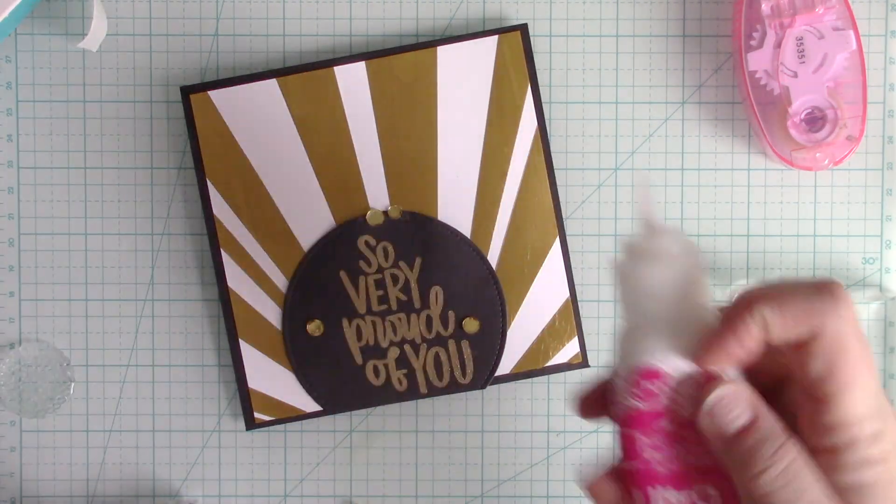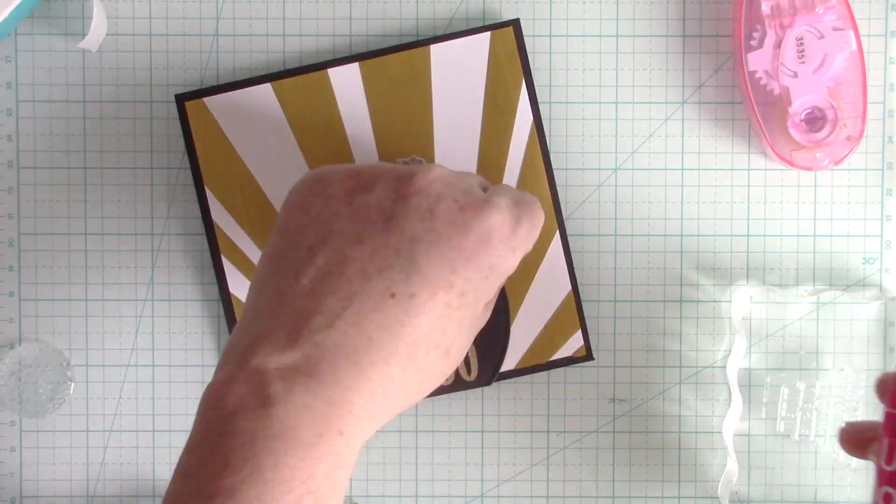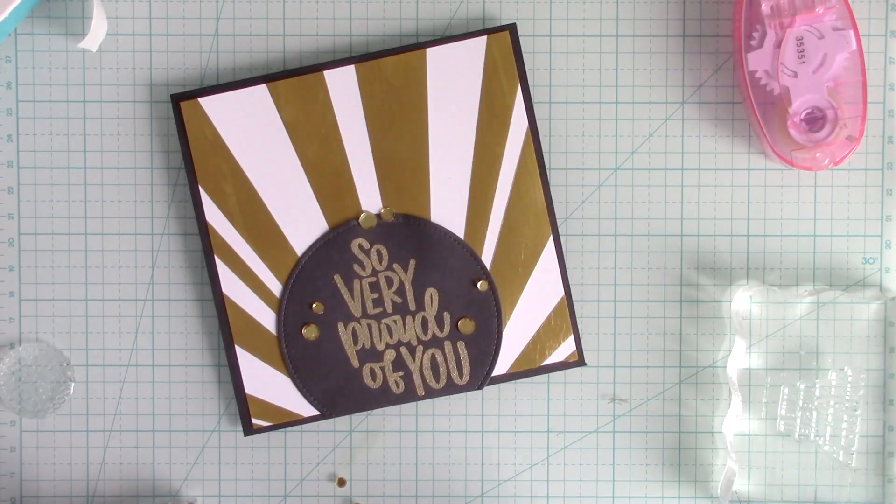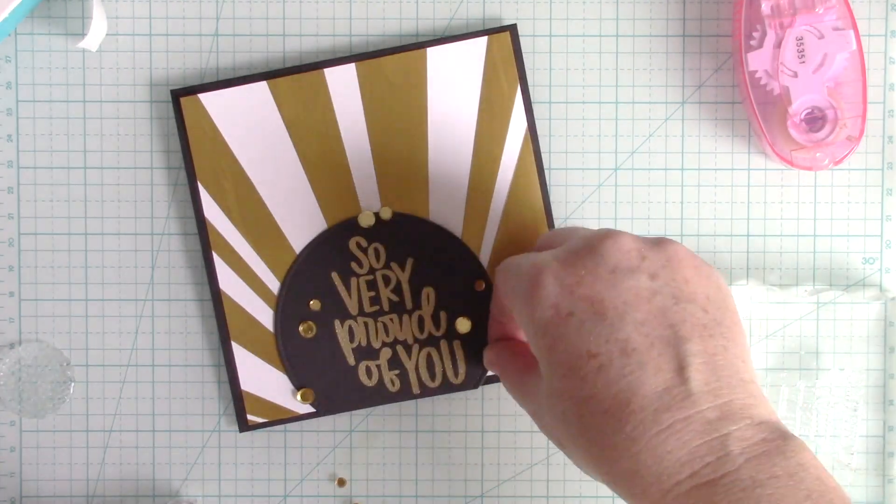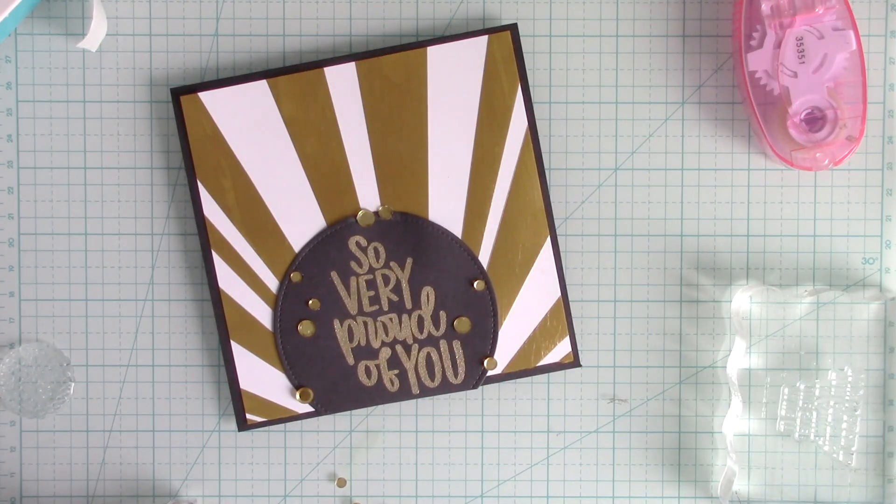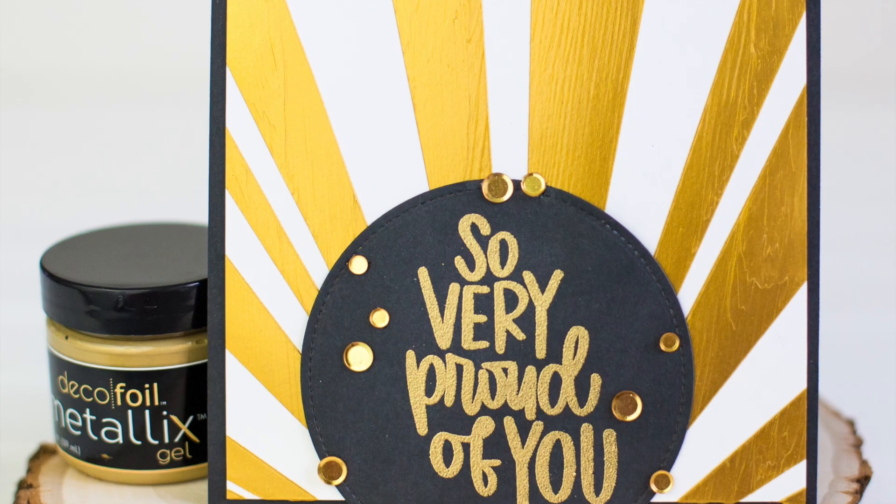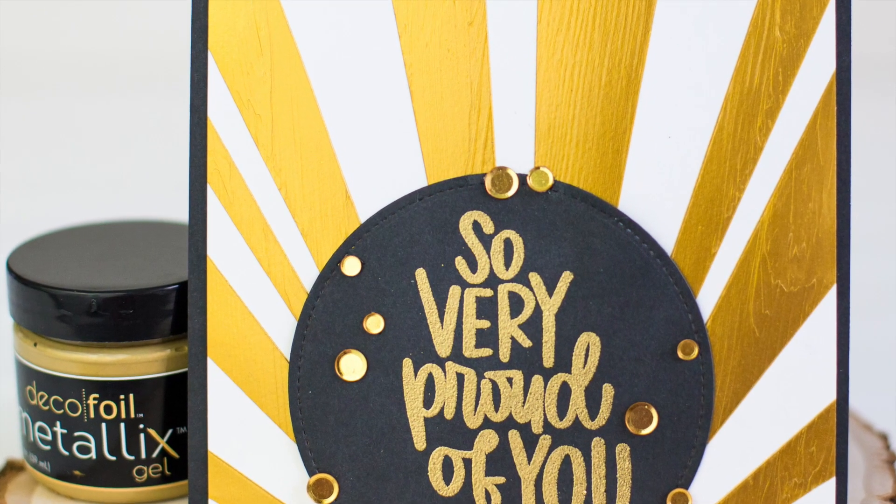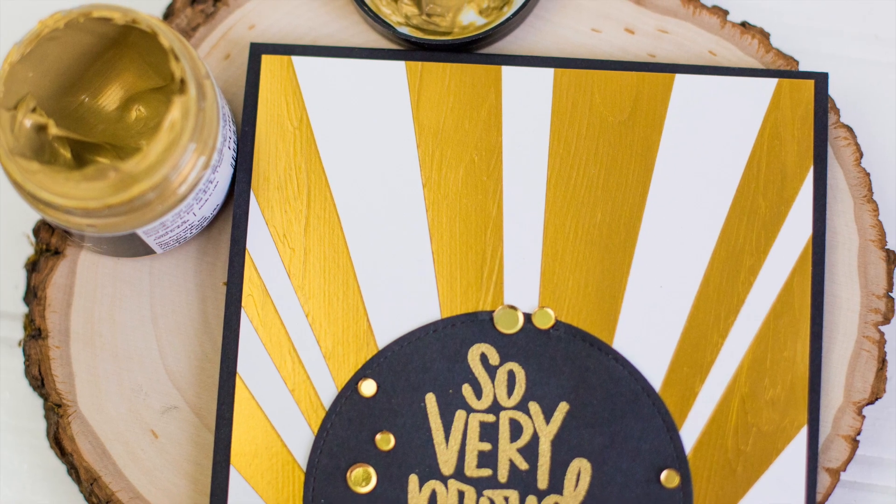Now I'm using some Ultra Bond, which is ThermaWeb's really strong liquid adhesive, to adhere some gold sequins. Again, that background is so impactful that you don't need to do this. I thought it was just a fun look, kind of went along with the gold and sun theme there. So that's four different ways to create four different backgrounds using four different colors of metallics.